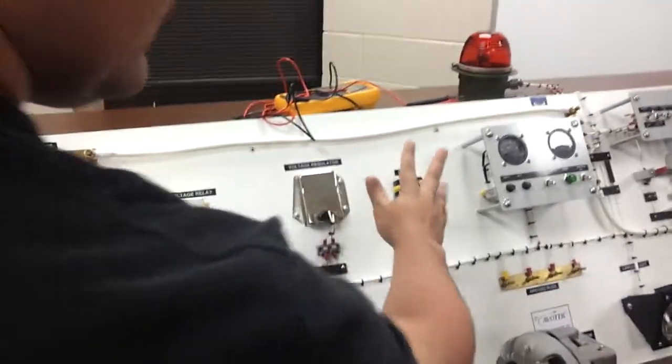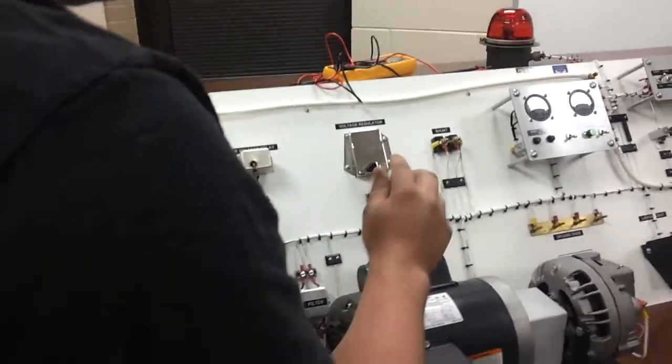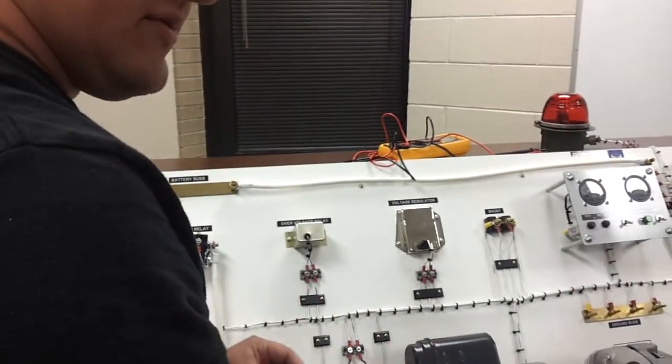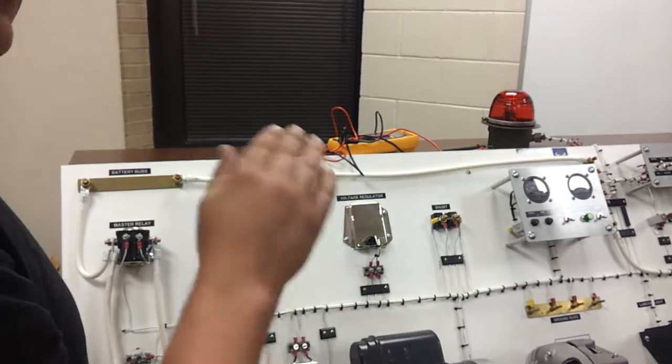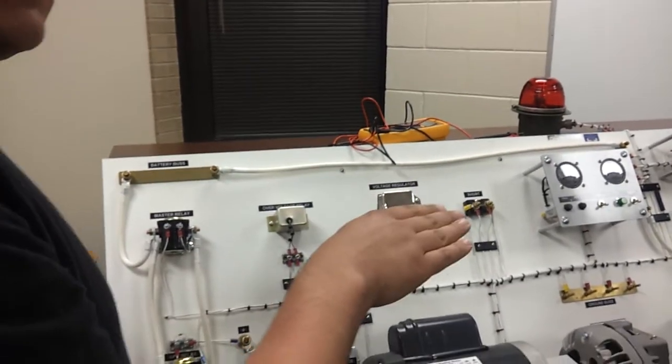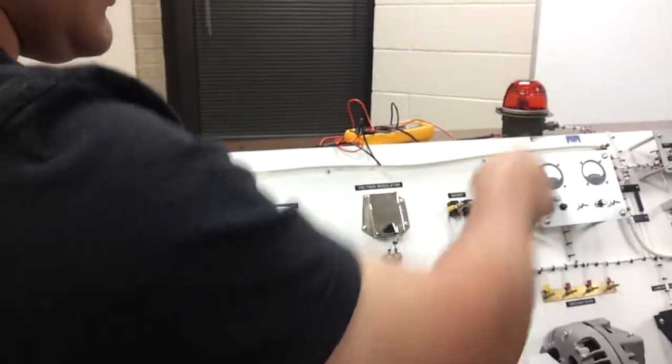The shunt is the precise resistor that you use to measure your amperage. The voltage regulator is to regulate it to exactly 14 volts for all your components.